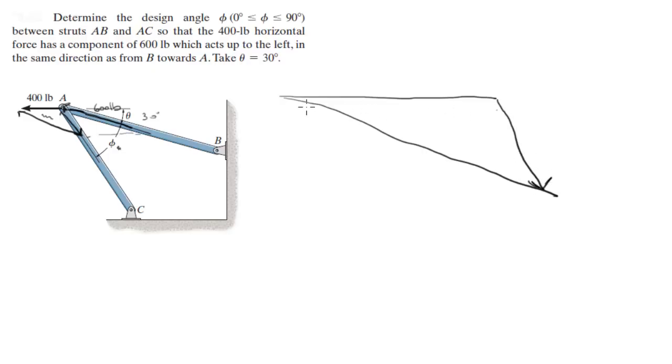This is one force, this is another force, and this is the 400 pound force. This force is 600 pounds. Let me redraw this over here for reference. You know that this angle theta is 30, which means this is 30.